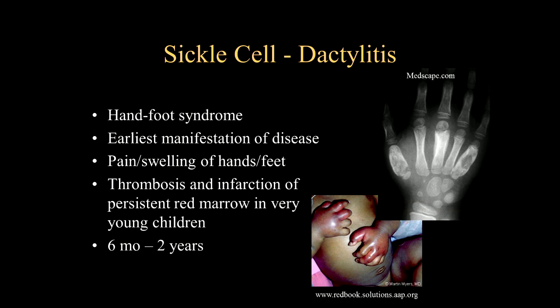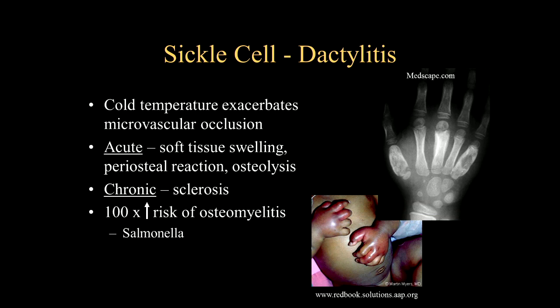This typically occurs in young children between six months and two years, and can be exacerbated by cold temperatures, which brings out the sickling in the cells. Acutely, you're going to have soft tissue swelling. With time, you'll see periosteal reaction, as seen in the radiograph, as well as osteolysis. With the reparative response in the chronic phase, you'll see sclerosis. Patients are also at increased risk for infection, specifically with salmonella.